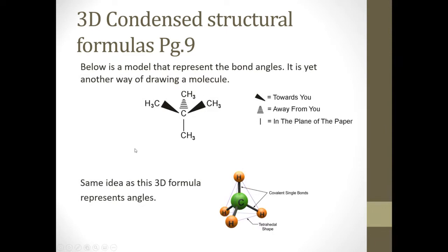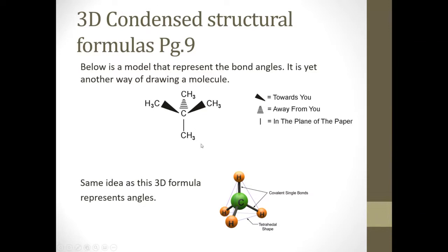One more brief look at 3D condensed structural formulas — this is a model representing bond angles. It's yet another way of drawing a molecule. They use shapes and symbols to tell us whether this molecule is coming out towards you, going away from you, or if it's in the same plane of the paper. Not really anything here for us to worry about — this is just theoretical background information.